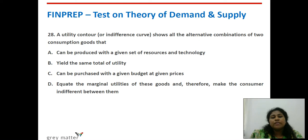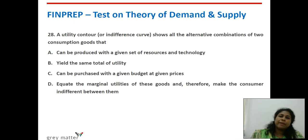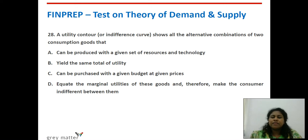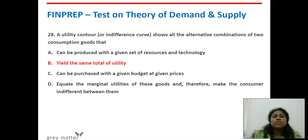Twenty-eighth question: a utility contour — the other name for an indifference curve — shows all the alternative combinations of two consumption goods that yield what? The definition of an indifference curve: various combinations of good X and Y giving the same level of satisfaction or utility. Options include: can be produced with given resources and technology; yield the same total utility; can be purchased with a given budget; equate the marginal utilities of these goods. The answer is option B — yield the same total utility.